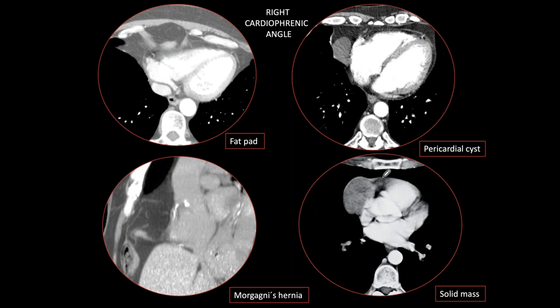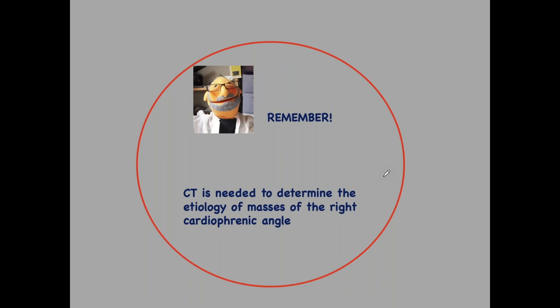If you are taking an examination, you can make a brilliant diagnosis by saying the patient may have a thymoma in the lower mediastinum. Remember: the point of this last case is that to determine the etiology of masses in the right cardiophrenic angle, you need a CT. If you have any clinical suspicion and the patient is not asymptomatic, then do a CT to discover what is there in the right cardiophrenic angle.